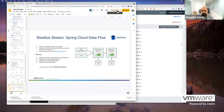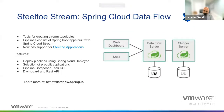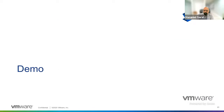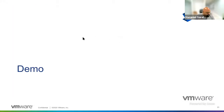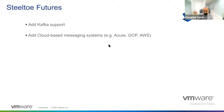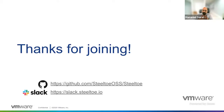That pretty much sums up how easy Steeltoe Stream makes your application portable. It makes it easy for you to not worry about which broker you're using — tomorrow, this exact same application with your business logic can be moved over to Kafka without making any code changes, or taken to a different cloud environment. What's next for Steeltoe is to add support for Kafka and other cloud-based systems. PRs are welcome — go to the Steeltoe GitHub and submit a PR, or talk to us on Slack. That pretty much concludes the demo and presentation. Thank you for joining us.